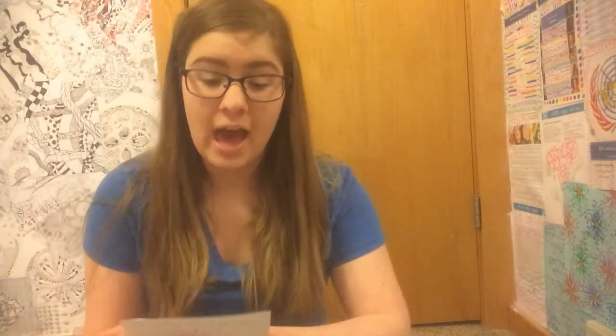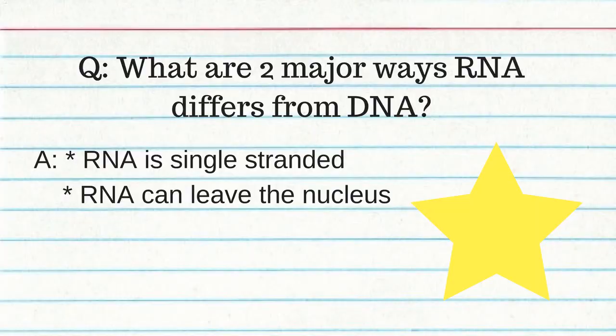The possible nitrogen bases for RNA are adenine, uracil, guanine, and cytosine. Adenine goes with uracil and guanine goes with cytosine. The two major ways RNA differs from DNA: RNA is single-stranded and can leave the nucleus; also, it has uracil instead of thymine.